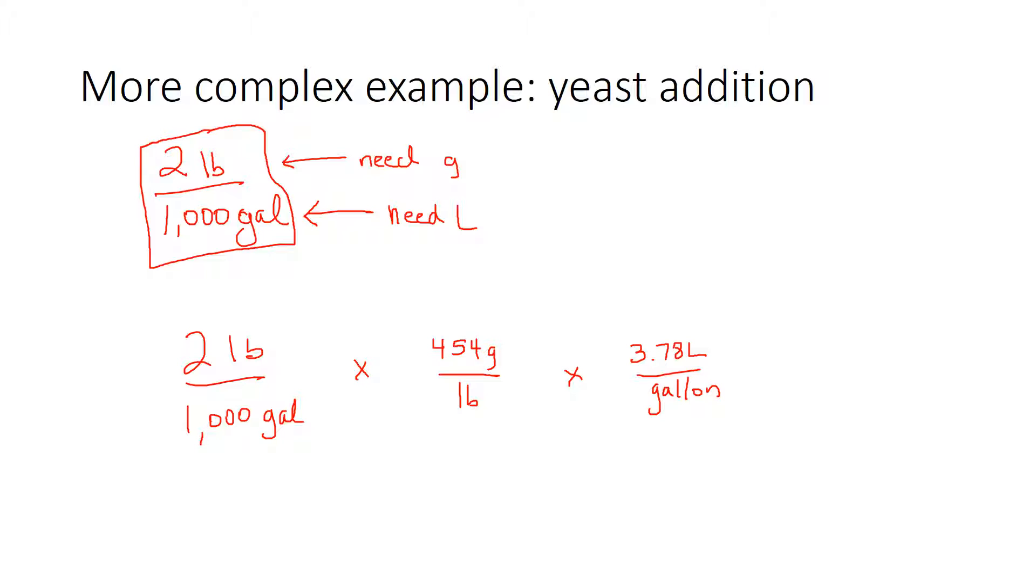And then I need one more conversion factor to convert gallons to liters. And we've already seen that it's 3.78 liters per gallon. And so then you just do the math. And if we multiply this through, I'm going to pause, I'm trying to pause this recording so I can do the math and come back to you. And it turns out that that is 3.43 grams per liter.